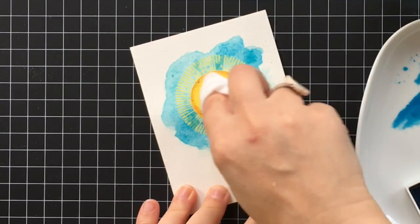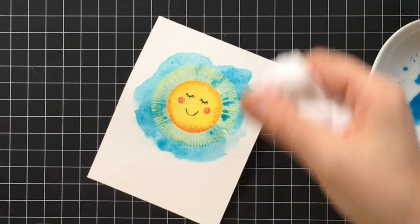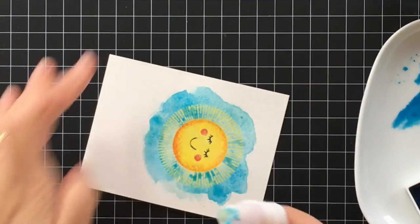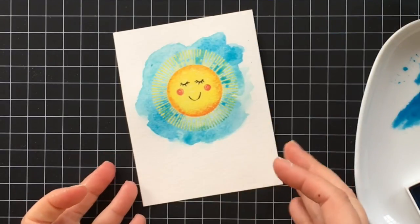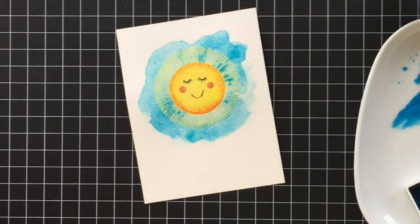Now I'm going to take a baby wipe and I'm just going to wipe the face of the sun. This will remove the watercolor that's beaded up on there. I like to do this before the watercolor has dried, but if you forget you can always use a baby wipe and go over it after it's dried too. You just have to be more careful not to touch the watercolored areas that you want to keep.